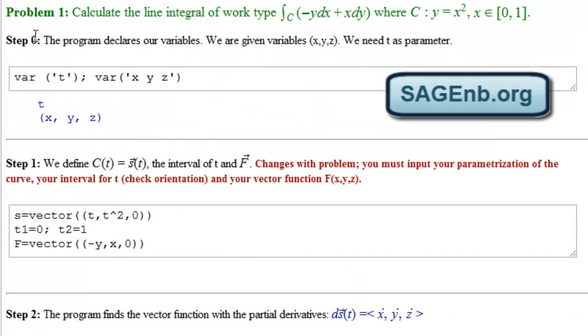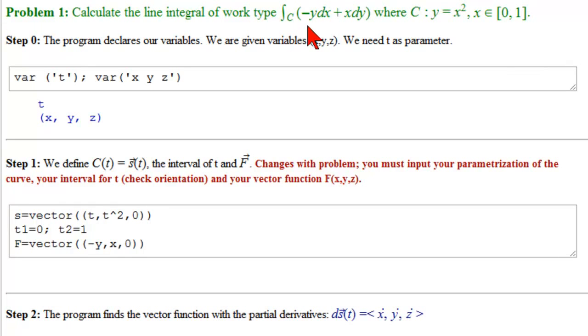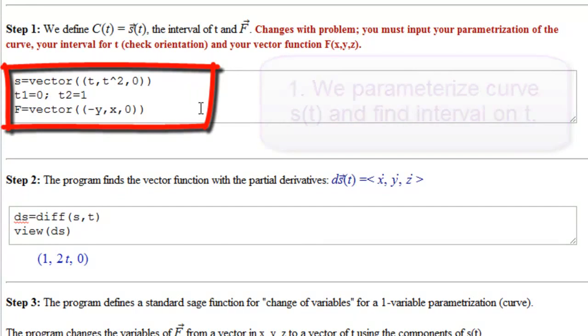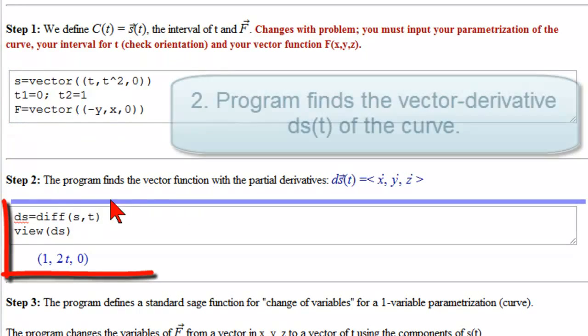So here we are in SAGE with the problem stated the original way. Calculate the line integral of work type. There's the integral over the curve minus y dx plus x dy, where the curve is y equal to x squared for x from 0 to 1. So it's a curve with a direction oriented. We put in our variables: we need t for the parameter, x, y. We don't need z, but it doesn't bother us, so we'll put in z. Step 1, we have to do outside of the solver. Remember, we had to parameterize the curve. Because it was explicit, we just let x equal to t, y equal to t squared, z equal to 0. Our interval was the same as x, so from 0 to 1. And our vector was given with the components minus y, x, and 0.